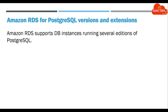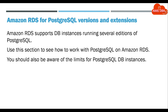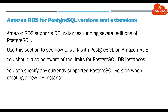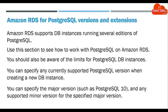Amazon RDS supports DB instances running several editions of PostgreSQL. Use this section to see how to work with PostgreSQL on Amazon RDS. You should also be aware of the limits for PostgreSQL DB instances. You can specify any currently supported PostgreSQL version when creating a new DB instance. You can specify the major version, such as PostgreSQL 10, and any supported minor version for the specified major version.